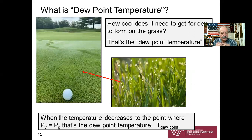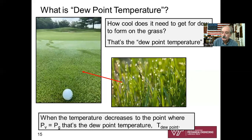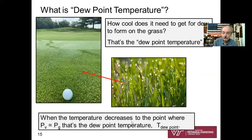The dew point temperature is the temperature — cooler than the surroundings — at which dew forms on the grass. When the temperature of the surroundings decreases to the point where P-V, the partial pressure of the vapor, equals P-G, the saturation pressure, that is the dew point temperature, T-sub-dew-point.